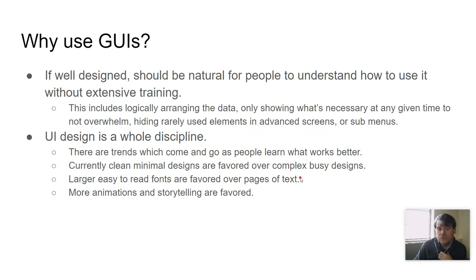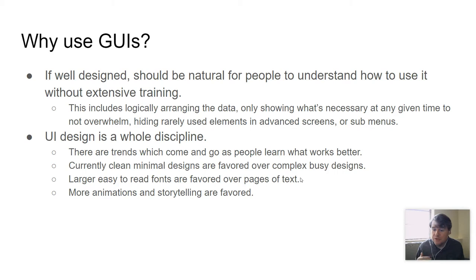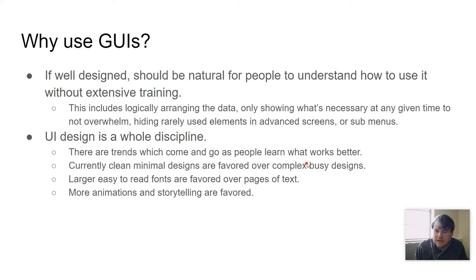Why do we use GUIs? The simple answer is it's what people expect. The bigger answer is it allows us to organize information in a much more useful, natural way. The discipline of user interface design — human-computer interaction, or HCI — is an entire field of computer science. Large software engineering companies have entire groups dedicated to deciding what will work for people and what won't.